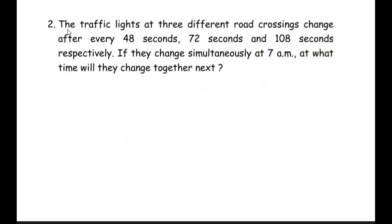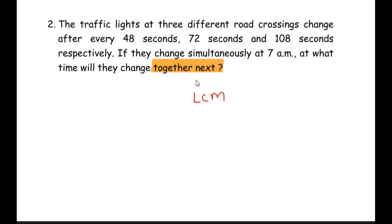Second Type 2 question: The traffic lights at three different road crossings change after every 48 seconds, 72 seconds, and 108 seconds respectively. If they change simultaneously at 7 AM, at what time will they change together next? We find the multiples of 48, 72, and 108 — the smallest common multiple gives the time at which the traffic lights will simultaneously change next. Again we find the LCM, and the keyword 'together' is present.